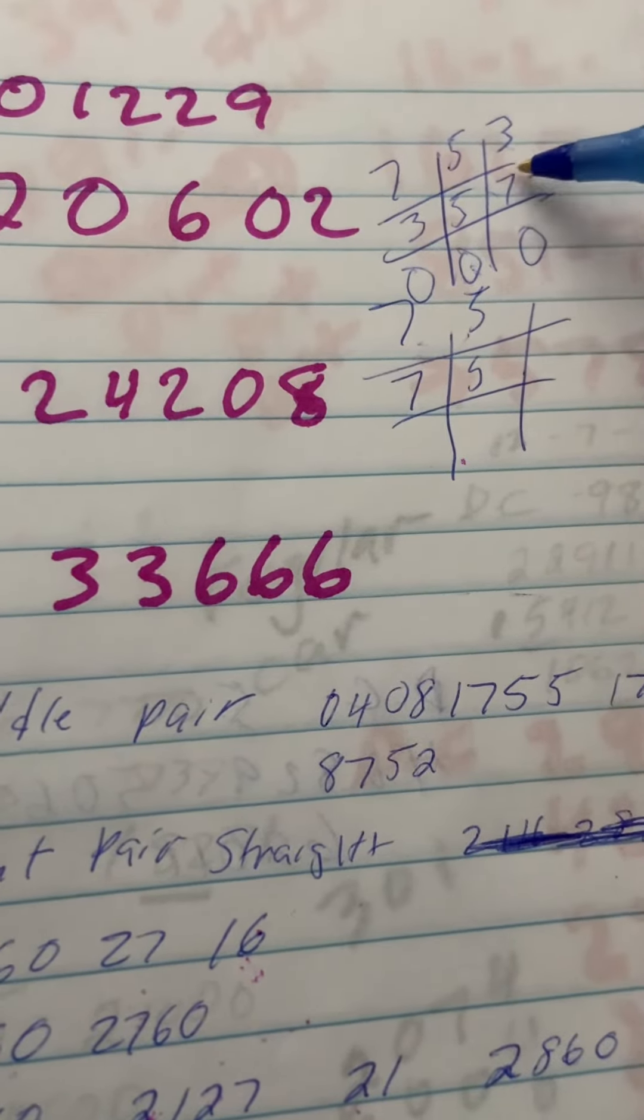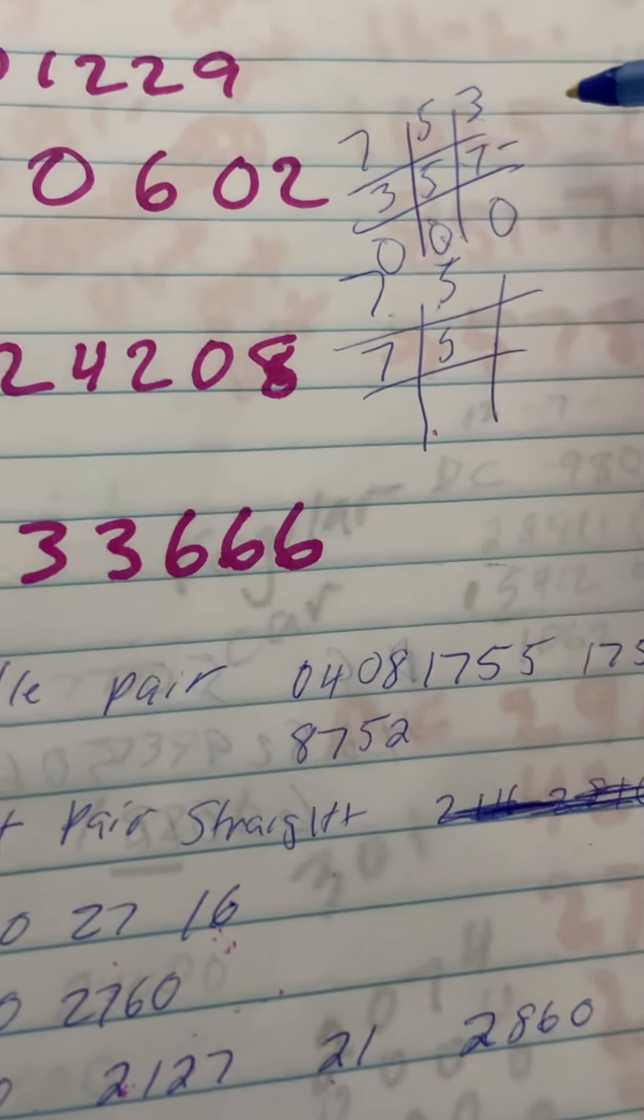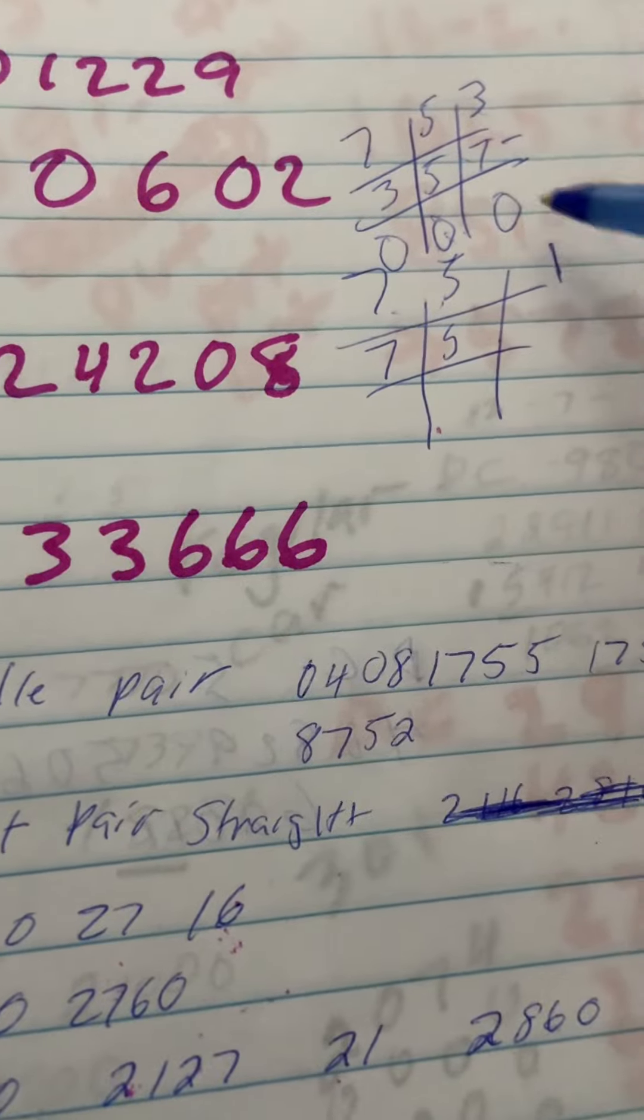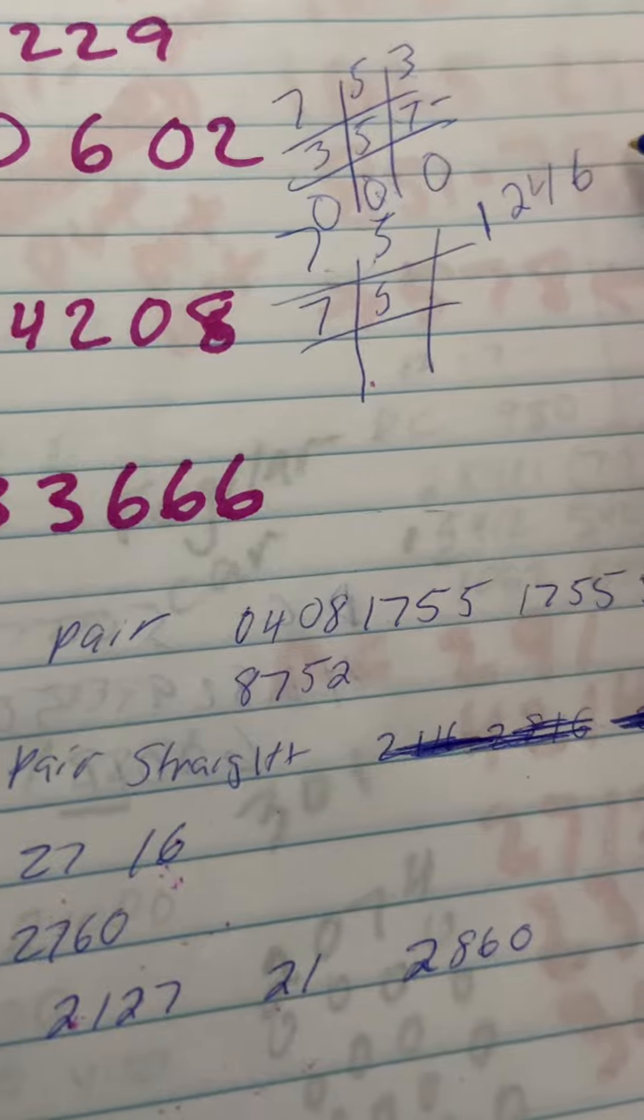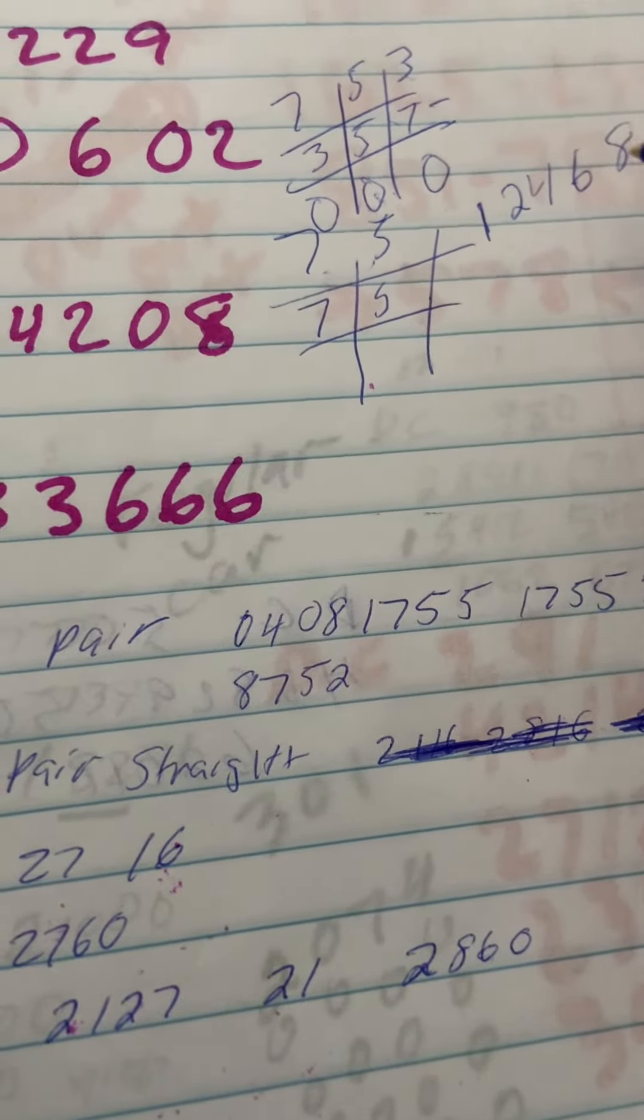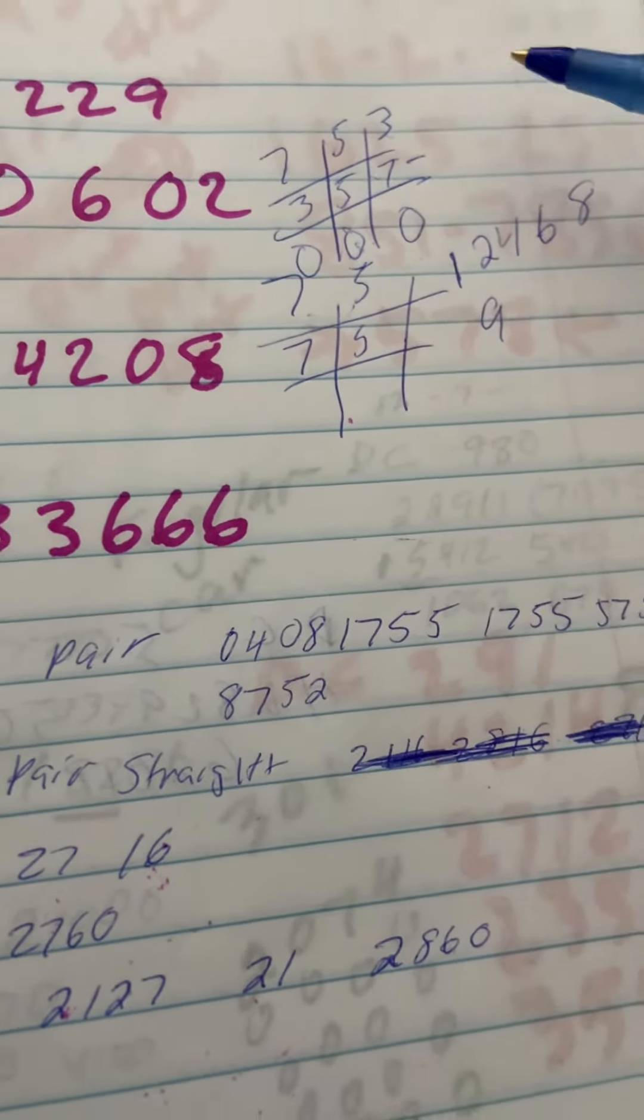What numbers do you not see? You don't see a one, you don't see a two, you don't see a four, you don't see a six, and you don't see an eight, and you don't see a nine.